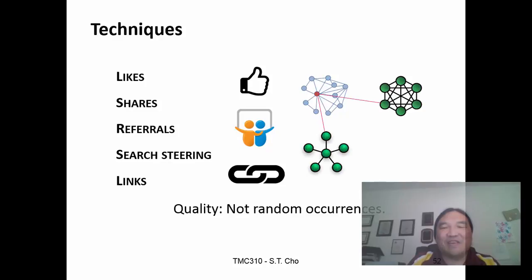I want these things to come from quality actions, not just randomly happen. A big power is when you can connect networks together — all of a sudden your entire network grows. That's connecting one structure to another.